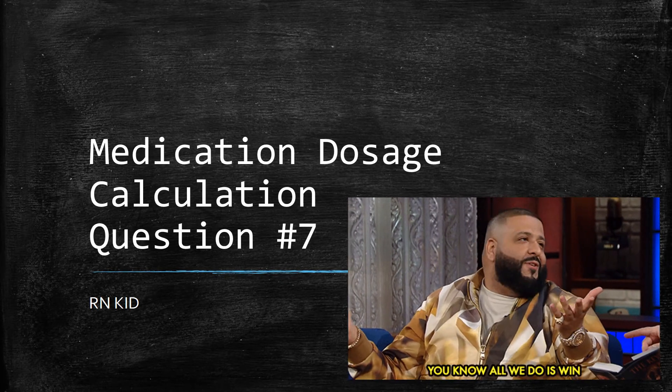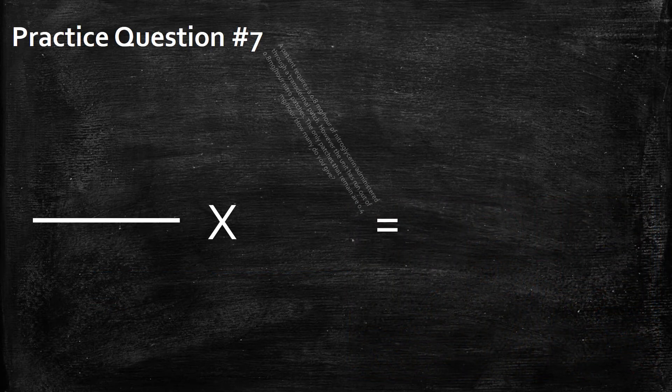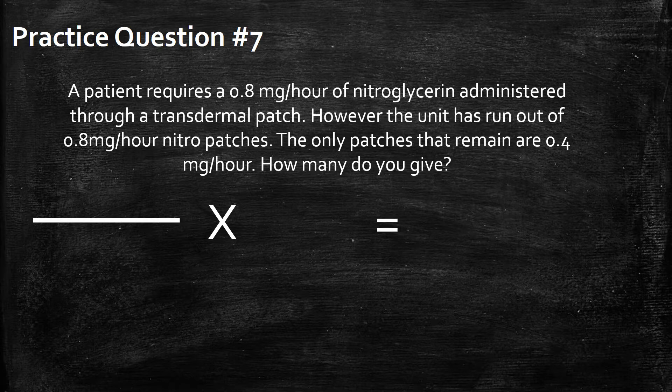Medication Dosage Calculation Number 7. A patient requires 0.8 mg an hour of nitroglycerin administered through a transdermal patch. However, the unit has run out of 0.8 mg per hour nitro patches. The only patches that remain are the 0.4 mg per hour patches.